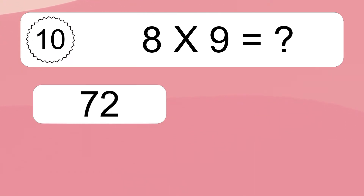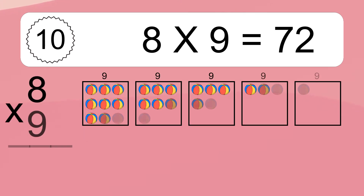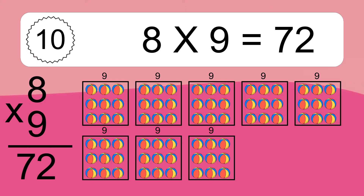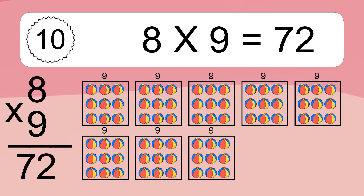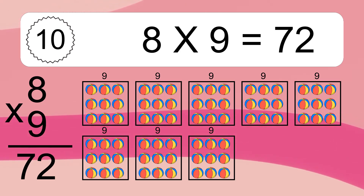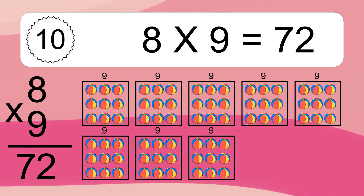8 times 9 equals what? We have 8 boxes, and each box has 9 colorful balls inside. If you count all the balls in all the boxes together, you will have 8 times 9 balls. This equals 72 balls.